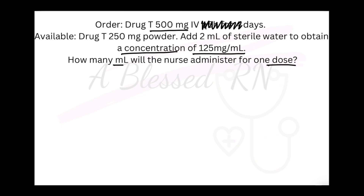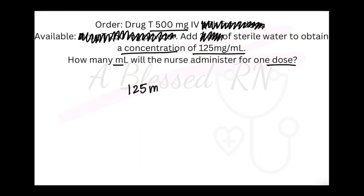Because it's asking for 1 dose, we can go ahead and scratch out the frequency — we don't need that. We just need 1 dose, which is going to be that 500. Also, how much we need to add to the bottle or how much the bottle contains is none of our business, because we want the concentration. So I'll set up my ratio.